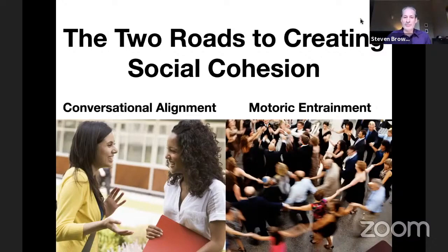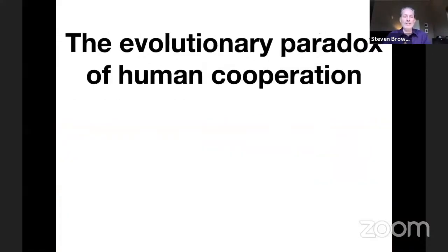Okay, so thank you very much, Merle, for the invitation to this very interesting workshop. My talk today is called Two Roads to Creating Social Cohesion: Conversational Alignment and Motoric Entrainment.